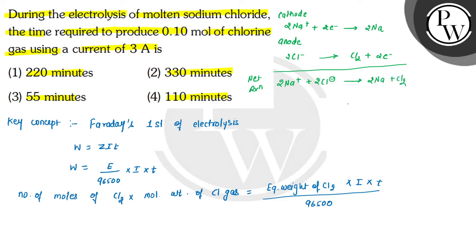So according to this reaction we will put values. Number of moles of Cl2 are given 0.10, molecular weight of Cl2 gas is multiplied by 71 because for chlorine the molecular mass is 35.5 and here 2 chlorines are present, so 35.5 multiplied by 2 equals 71. Equivalent weight of chlorine is 35.5 multiplied by I, which is current, which is given 3 amperes, multiplied by T, which we have to calculate, divided by 96500. After calculating, T comes to 6433.33 seconds.